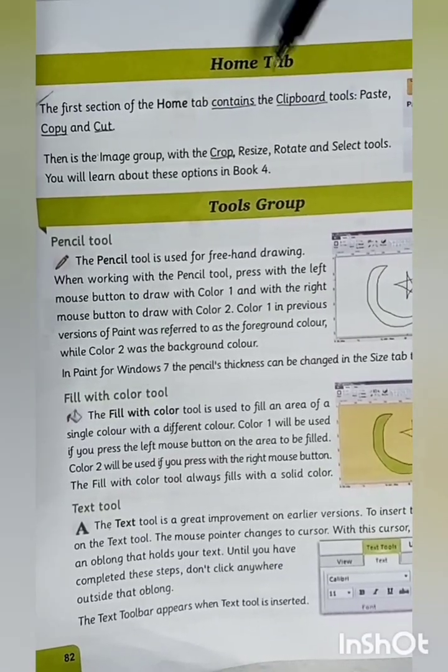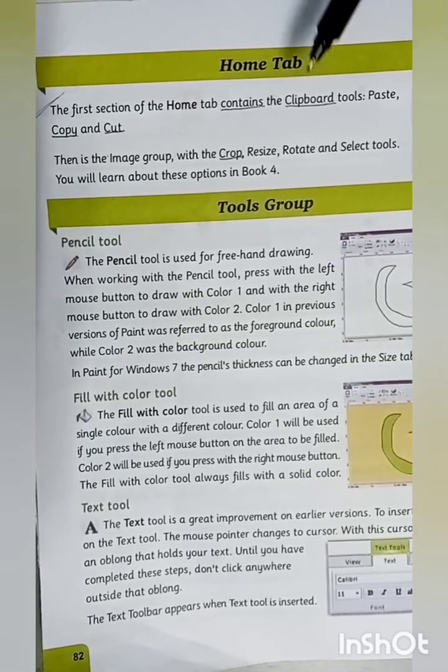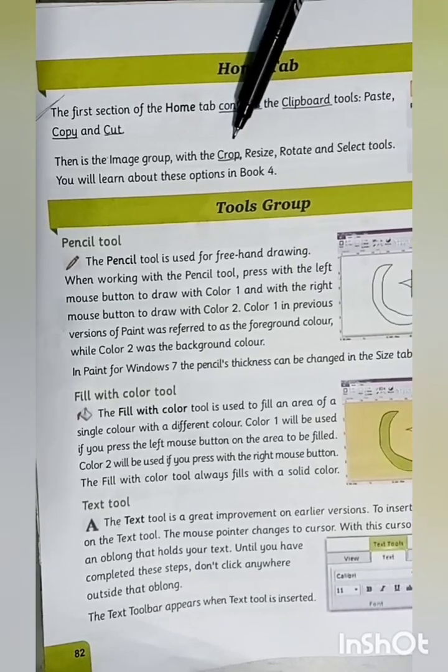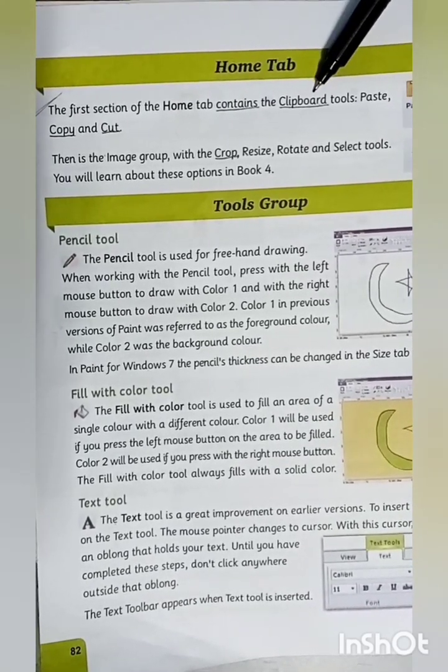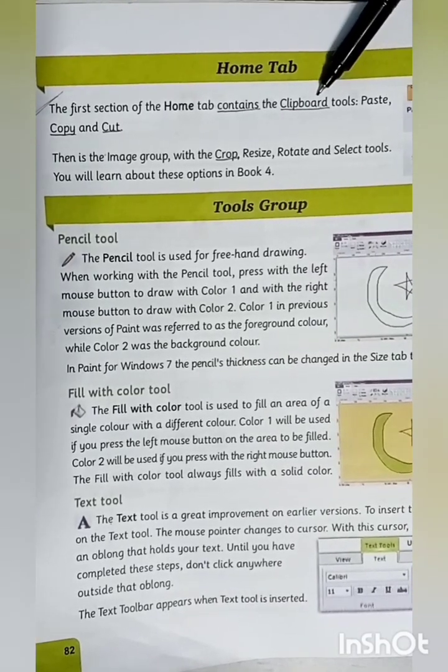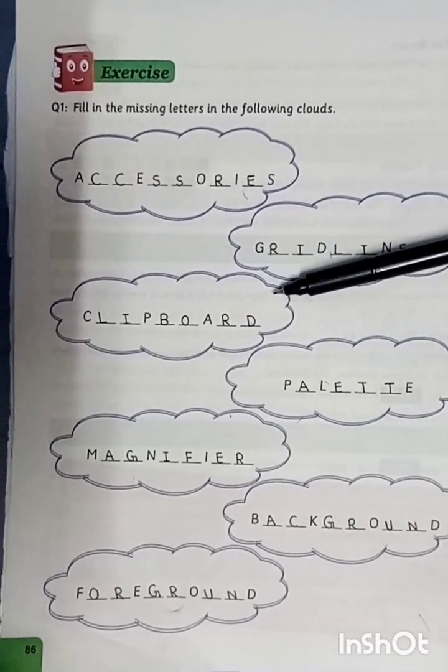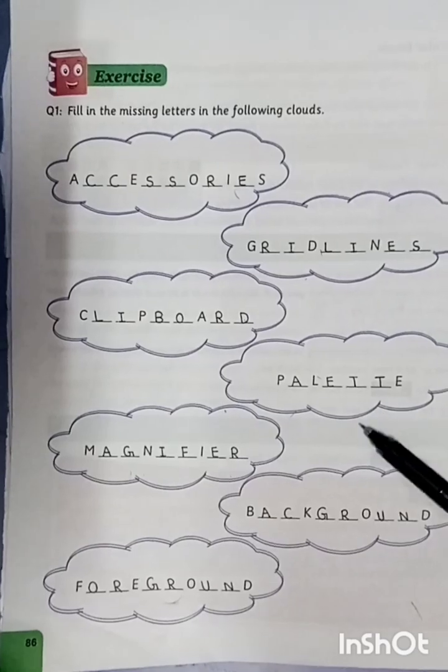Students, here are some words starting from the letter C: contains, clipboard, copy and cut, and crop. So students, as you can see that clipboard has 9 letters, so clipboard is our required word. Clipboard. Students, by following the same pattern you can find all the missing words.